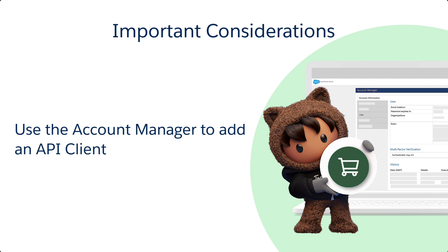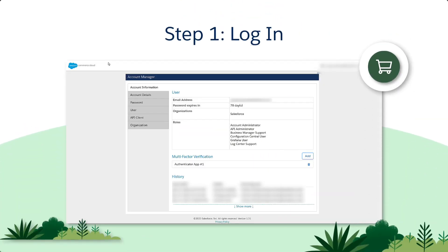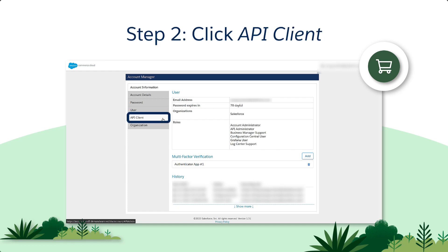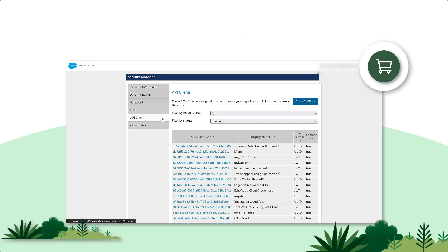Let's take a look. First, log in to Account Manager by going to account.demandware.com. On the left side of the page, click API Client. This opens the API Clients page.